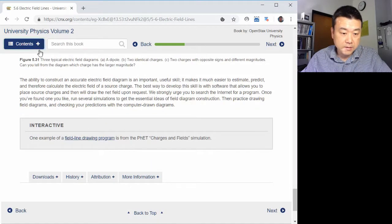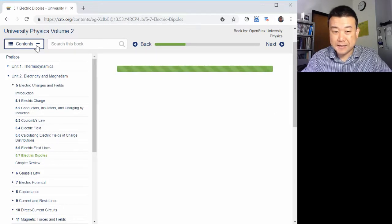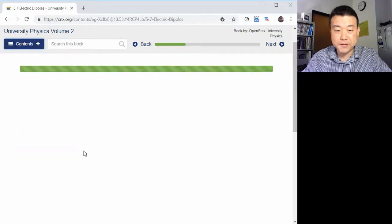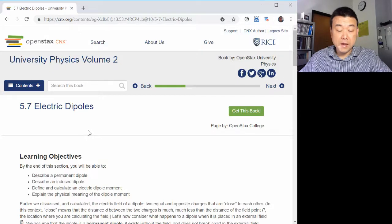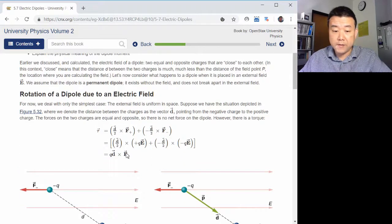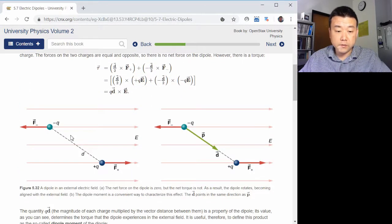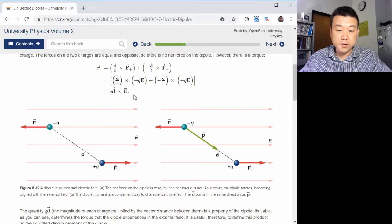One last thing is the electric dipoles. I used to actually skip this in the past semesters. I realized recently that I need to cover it. And here's why I need to cover it. The description of electric dipole itself, I think it's easy enough for you to derive it yourself. You look at the force on the two charges and you can figure out, oh, there is a torque.